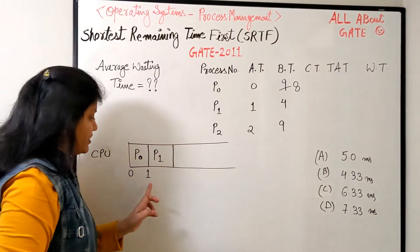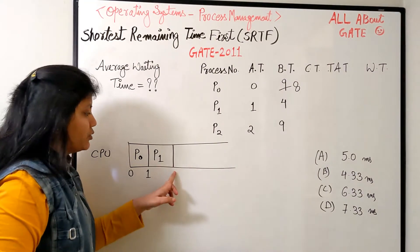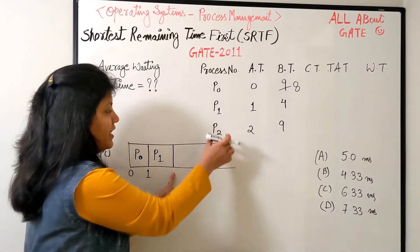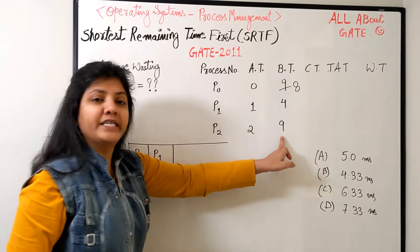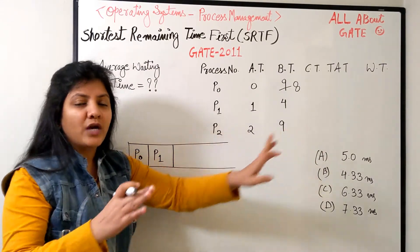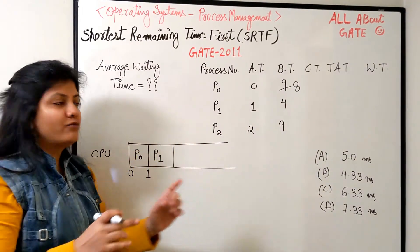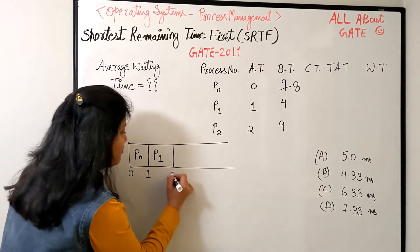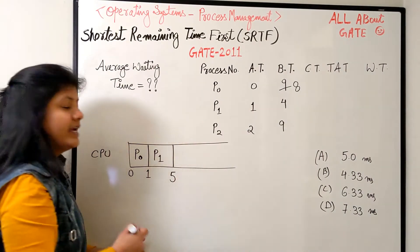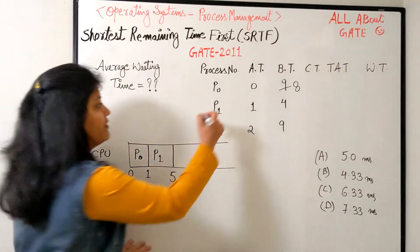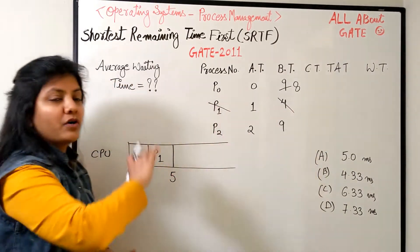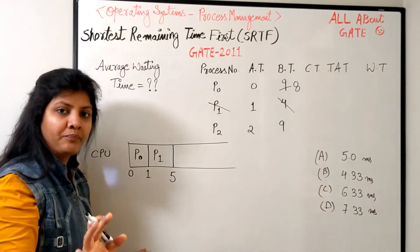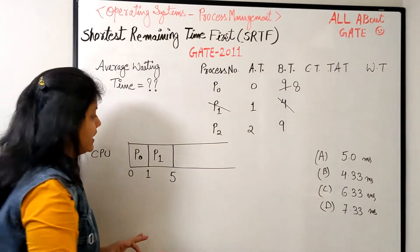The next process P2 is arriving at time two. I'll schedule P1 from 1 to 5 straightforwardly, giving it four bursts, making P1 finish. At time two P2 is coming but it needs only four bursts while P1 needs four - so P1 is among all processes the smallest at any moment of time.